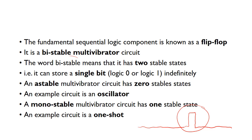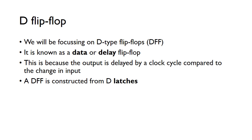With a bistable, because it has two stable states, you can leave it in a state of zero for as long as you want — essentially storing a zero — or you can make it go into state one, and it can stay there as long as needed. So it's stable in both states. We're going to be focusing on D-type flip-flops, also known as a data flip-flop or a delay flip-flop, because the output is essentially delayed by one clock cycle compared to the changing input.